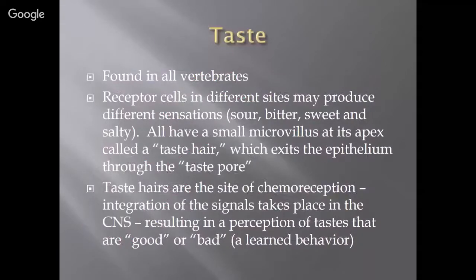Taste is found in all vertebrates. Receptor cells in different sites may produce different sensations — it's really a chemical reaction that leads to taste. Sour, bitter, sweet, and salty all have small microvilli at the apex called a taste hair, which exits the epithelium through a taste pore. The taste hairs are the site of chemoreception, and integration of signals in the CNS results in the perception of taste as good or bad. This is a learned behavior — if you didn't eat broccoli as a kid, you probably perceive it as bad. This is how animals learn to eat or avoid certain foods.